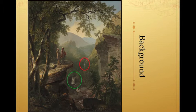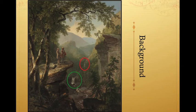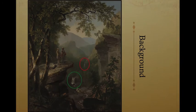In the far background, Durand painted the beautiful Catskill Mountains of New York in the typical style of the Hudson River School — real, yet awe-inspiring. This is Sam Chula. Thank you for listening. Have a nice day.